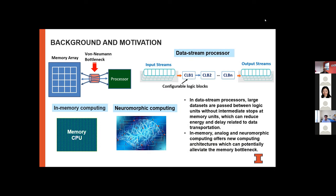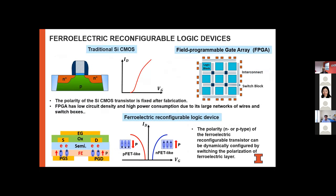In a data stream processor, logic units are reconfigured according to the data flow. Large data sets pass from one logic unit to the next without intermediate stops at memory, eliminating frequent data transportation between logic and memory, saving energy and time. Traditionally this logic unit is implemented by FPGAs — field programmable gate arrays — which have two limitations: low circuit density and high energy consumption due to large numbers of switch boxes and interconnects.